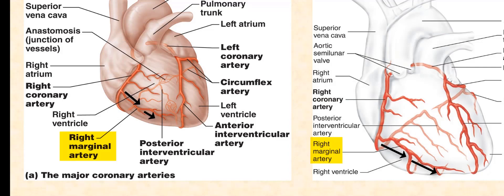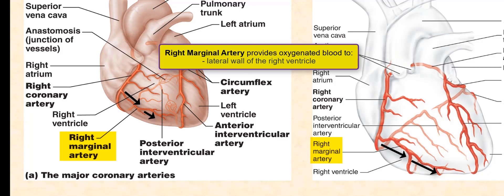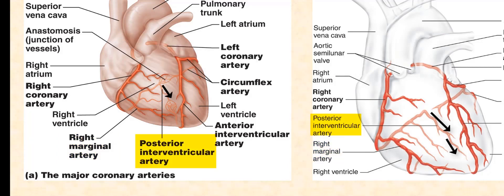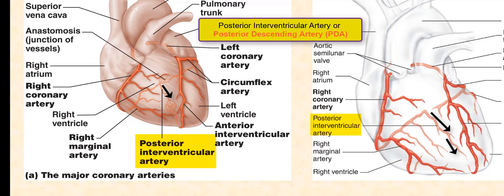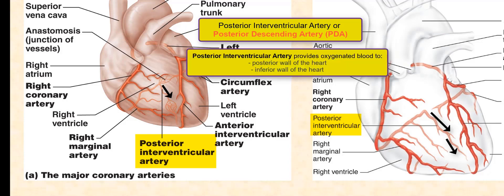The right marginal artery branches off the right coronary artery and supplies oxygenated blood to the lateral wall of the right ventricle. The posterior interventricular artery, also called the posterior descending artery, branches off the right coronary artery at the posterior side of the heart. It is found along the posterior interventricular sulcus and supplies oxygenated blood to the posterior and inferior wall of the heart.